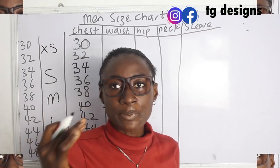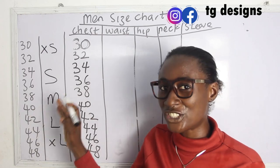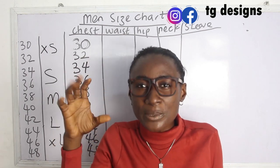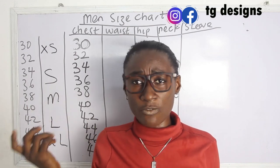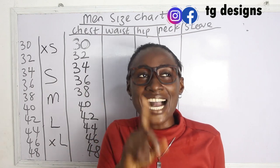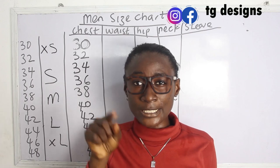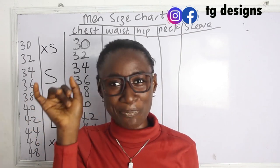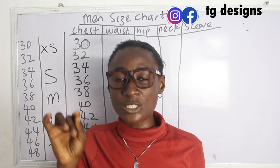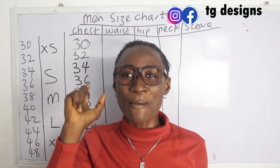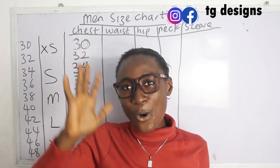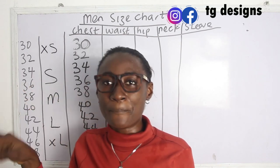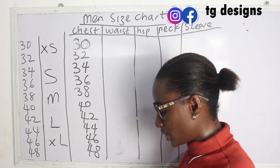You'll discover that the chest size is the same number as the size label — this is because for guys, the chest measurement is what they use to group them into sizes. The chest is generally the largest part of the body for most guys, except for those with a large tummy. For those with a pot belly, the waist may be largest, but basically guys are grouped by chest measurement.